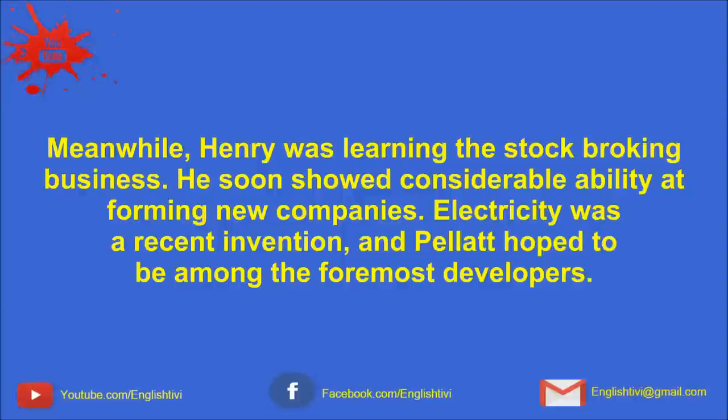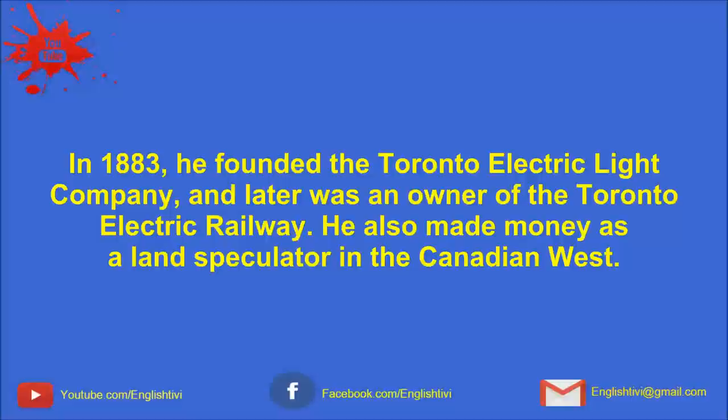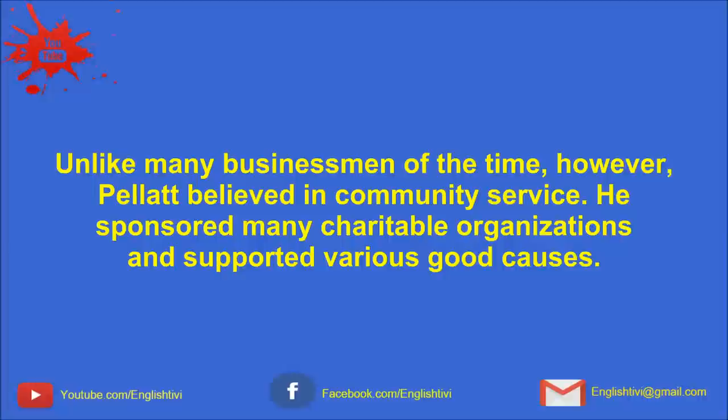Electricity was a recent invention, and Pellett hoped to be among the foremost developers. In 1883, he founded the Toronto Electric Light Company, and later was an owner of the Toronto Electric Railway. He also made money as a land speculator in the Canadian West. Unlike many businessmen of the time, however, Pellett believed in community service. He sponsored many charitable organizations and supported various good causes.